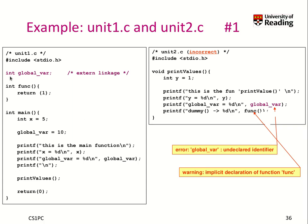In unit1.c, we declare and define a global variable. As we didn't put any further information, it's by default using external linkage. That means this variable is available throughout the code. After it's declared, we can use global_var — for example, here we print this value, and here we set it to 10 in the main program. That all works.